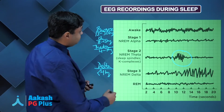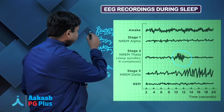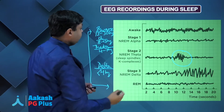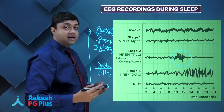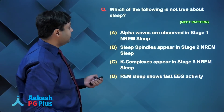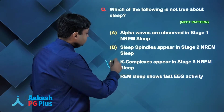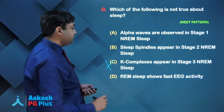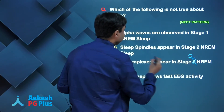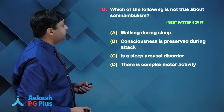As the person progresses into REM sleep, the EEG pattern for REM and the awake state is almost identical — very, very similar. Going back to our question, we can see that what is false is that K complexes appear in stage 3 NREM sleep. K complexes actually appear in stage 2 NREM sleep, along with sleep spindles.